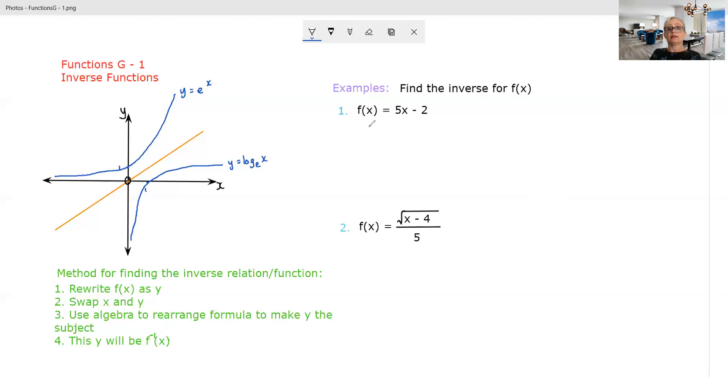So let's start here. Relatively simple to start with. So y equals 5x minus 2. So for our inverse, we're going to have x equals 5y minus 2. We want to get the y on its own. So add 2 and divide by 5. And lo and behold, we have f inverse of x is x plus 2 on 5.